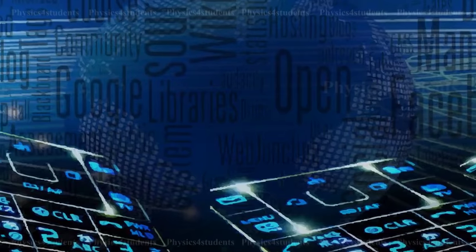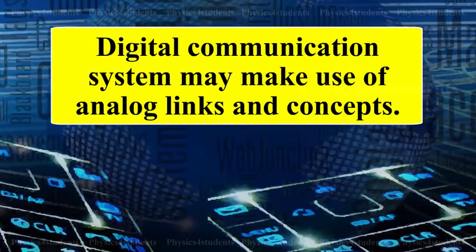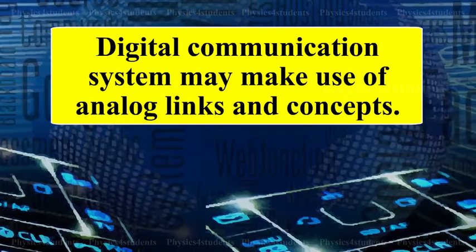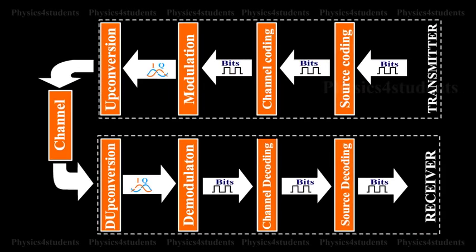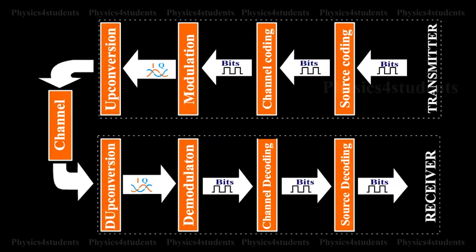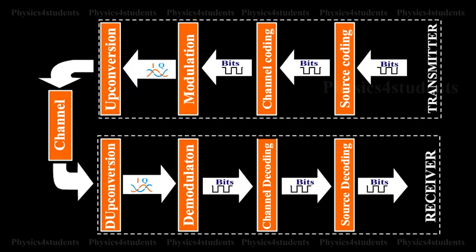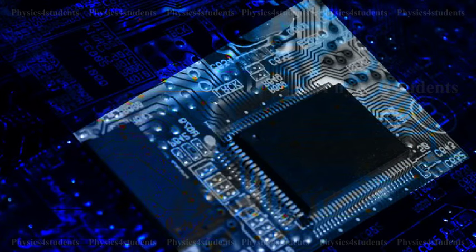A digital communication system offers many advantages to the user that cannot be achieved with an analog system. Digital communication systems may make use of analog links and concepts. A digital system is a more general case of a binary system. In a binary system, only two signal values can exist, often called 0 and 1, which represent specific voltages. The term data is commonly used in digital communication systems. Data is any form of information that has been put into digital form so that it can be handled by a digital system. The data itself is measured as a bit, which is a contraction of the term binary digit. Binary signals are easy to generate and process with digital circuits.